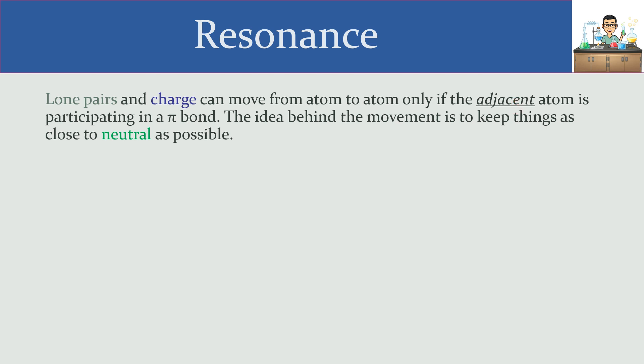That adjacent atom part is actually quite important, because it needs to be an atom that's next door that's participating in a pi bond. It can't be the same atom you're in right now, because you need a place to put those electrons. The idea behind the movement is to keep things as neutral as possible.